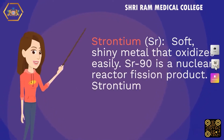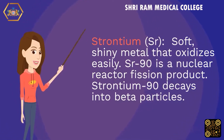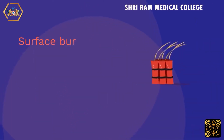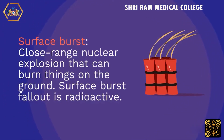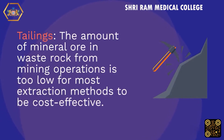Strontium (Sr): a soft, shiny metal that oxidizes easily. Sr-90 is a nuclear reactor fission product. Strontium-90 decays into beta particles. Surface burst: a close-range nuclear explosion that can burn things on the ground. Surface burst fallout is radioactive.